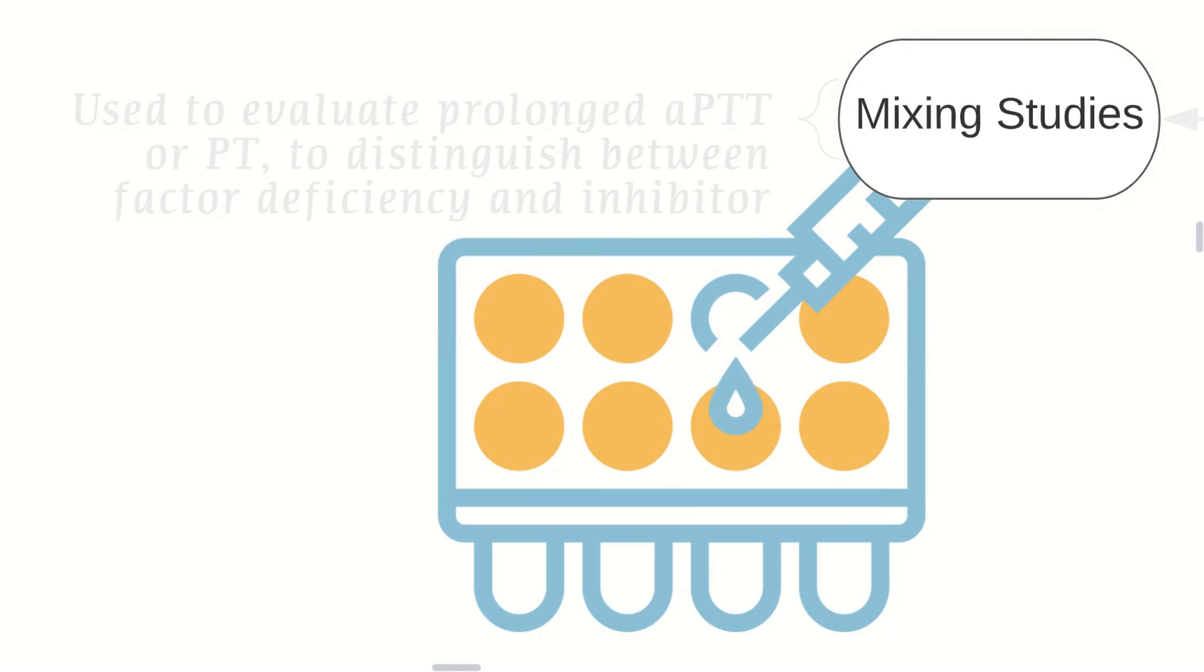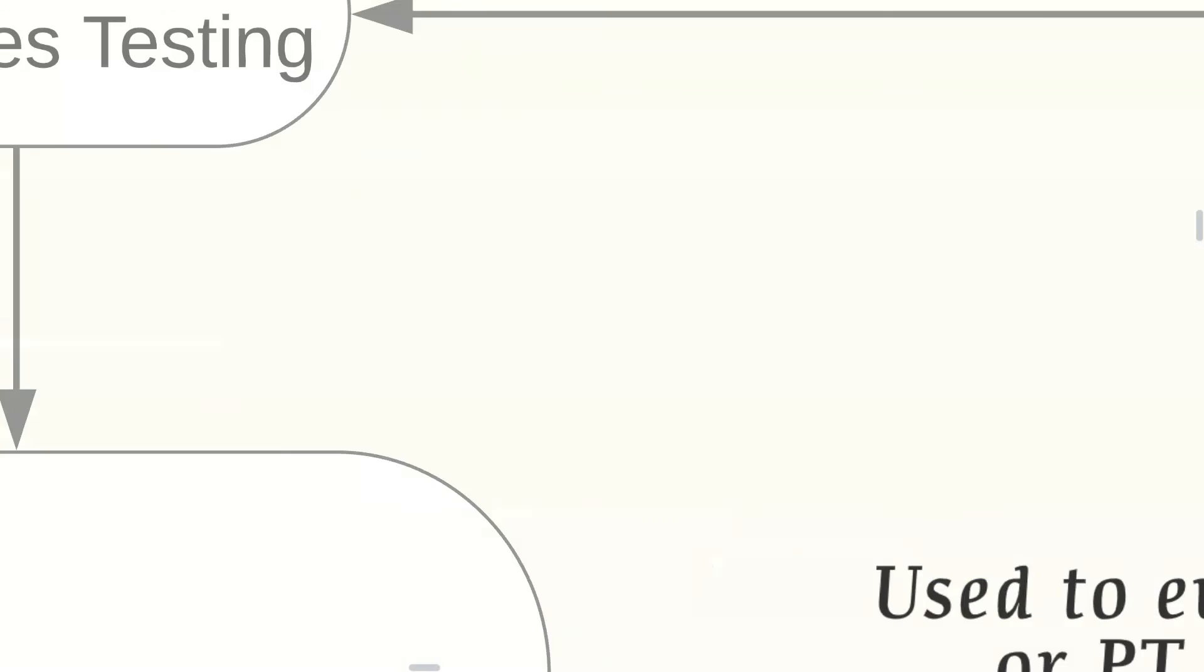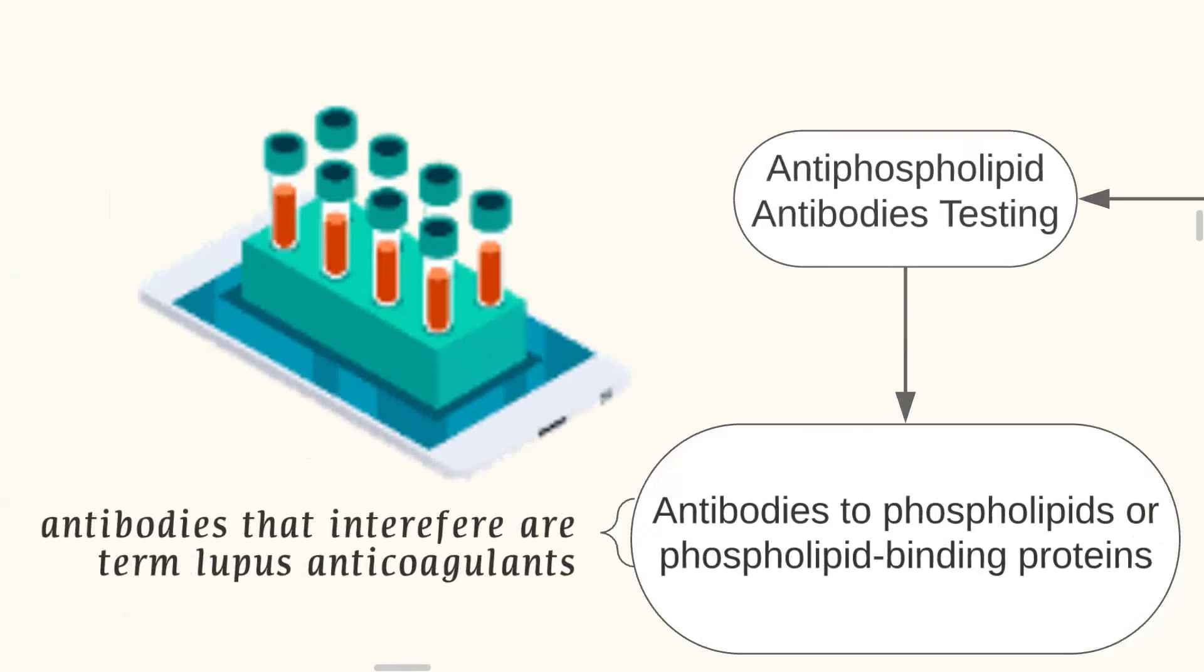Mixing studies are usually done to pre-evaluate a prolonged APTT or PT or to distinguish between a factor deficiency and an inhibitor. Anti-phospholipid antibody testing may also be done. This is simply testing antibodies that are interfering and are termed lupus anticoagulants.